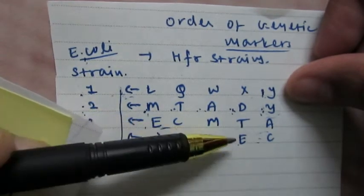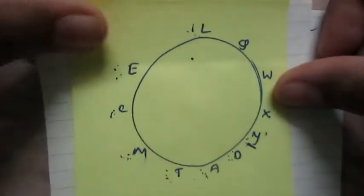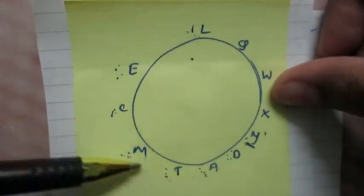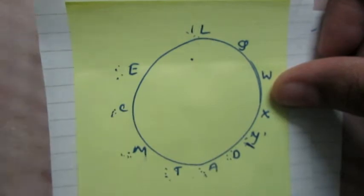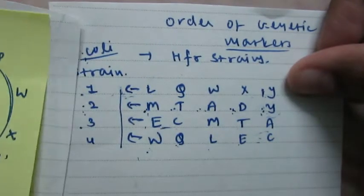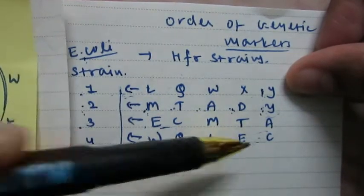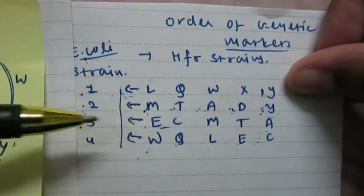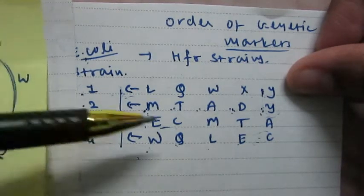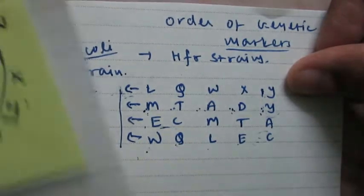So come down to ATM sequence, there is C and E. In the fourth strain, CE sequence is common between third and fourth strain. So come down to CE sequence, the leftover sequences are W Q and L. Come down to CE sequence, the leftover sequences are W Q and L.